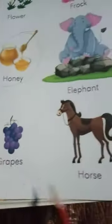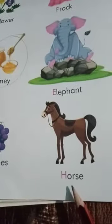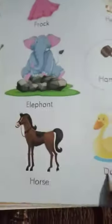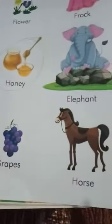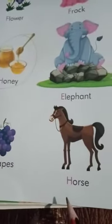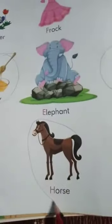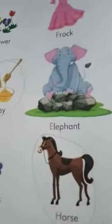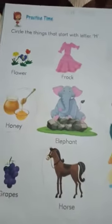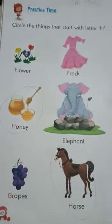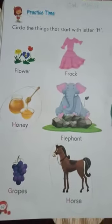You can see G for grapes and H for horse. This is D for duck. Duck and grapes are not circled. We have to circle the horse. So you can see H for horse — circle the horse.